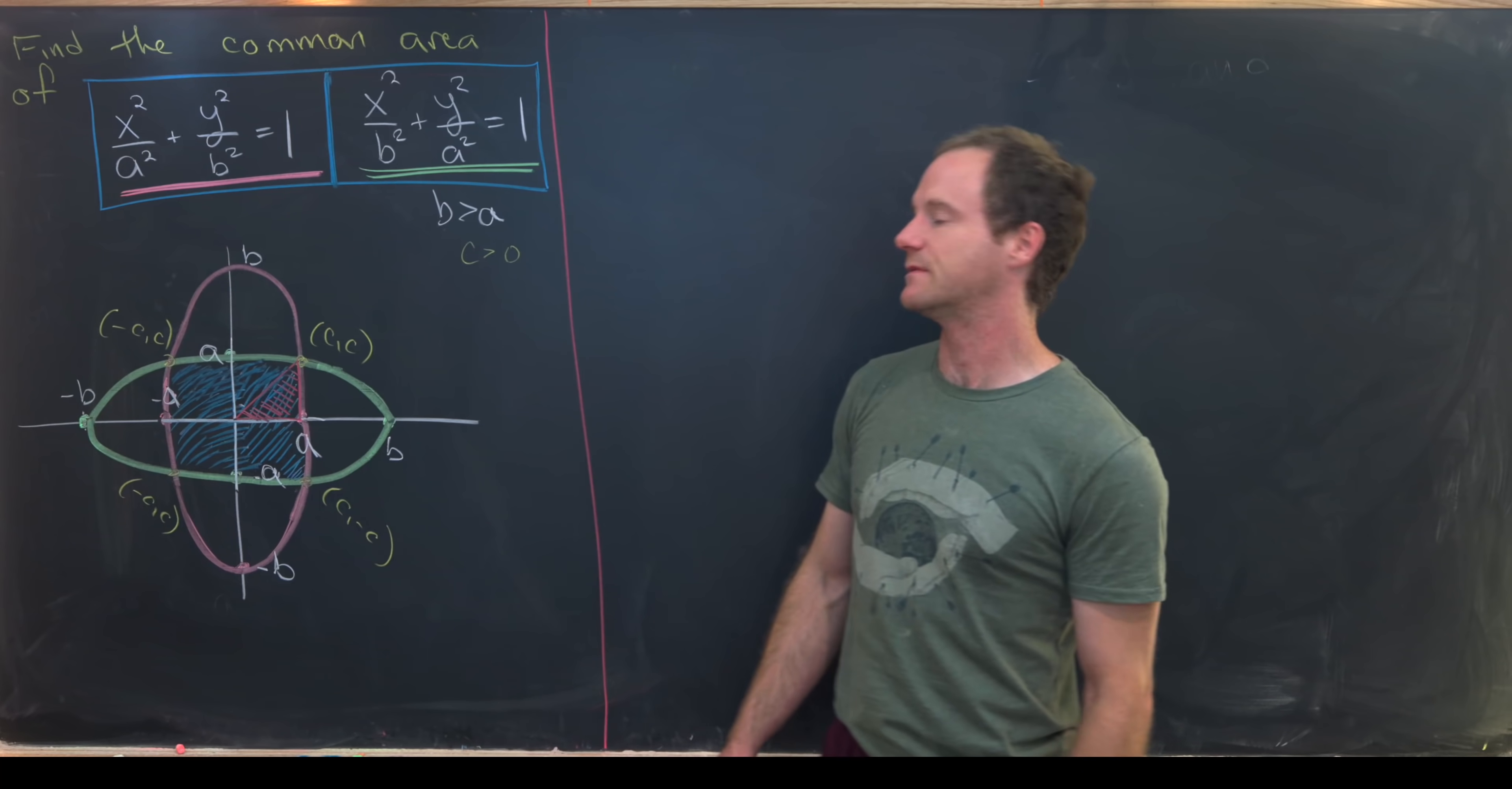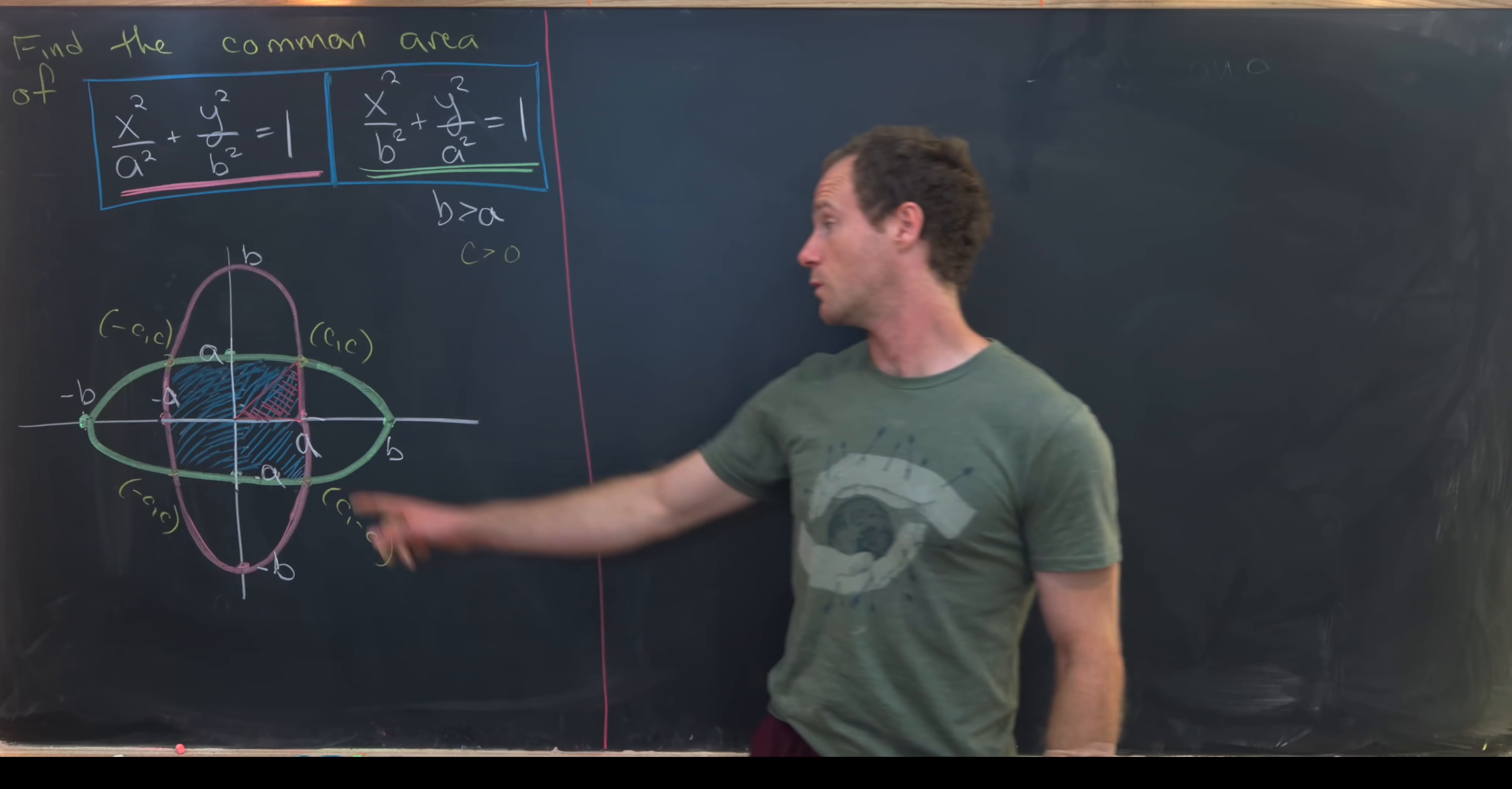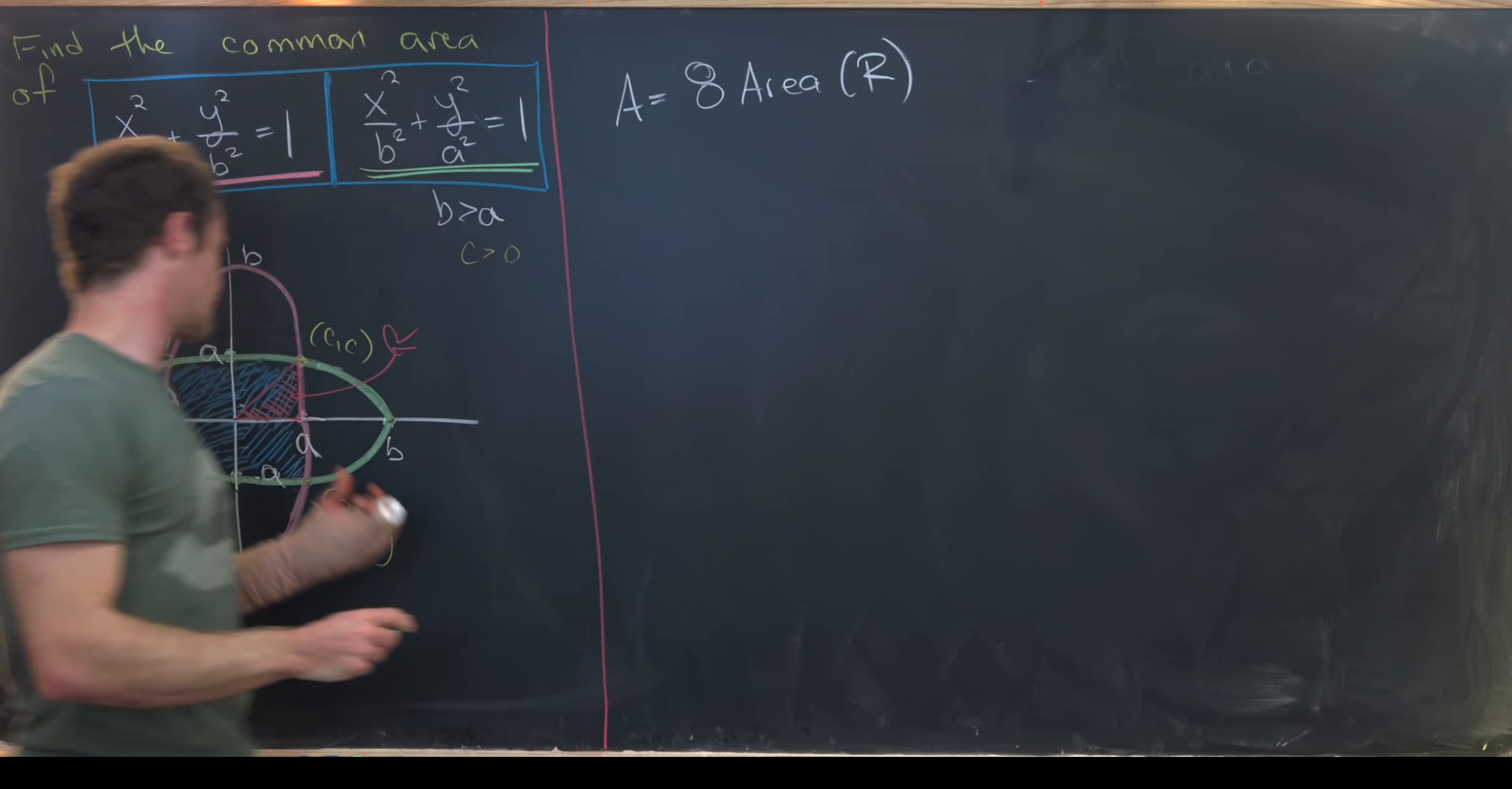And that's because of the symmetry built into this picture. Not only is it invariant under rotations by 90 degrees, but it's also invariant under reflections. So we can build this entire blue region just by doing rotations and reflections of this red region right here. So we might as well just find the area of this red region, which I'll denote as r. Our goal area is equal to eight times the area of region r.